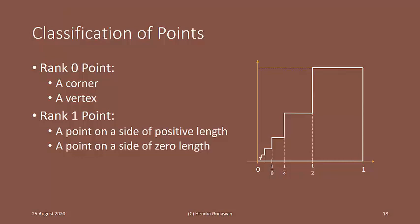To sum up, we classify points on the curve that encloses a 2D shape as follow. First, we have rank 0 points, which can be a corner or a vertex. Then, we have rank 1 points, which can be a point on the side of positive length or a point on the side of 0 length. 2D shapes are getting more interesting now.